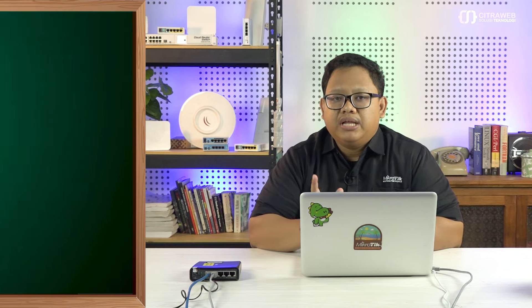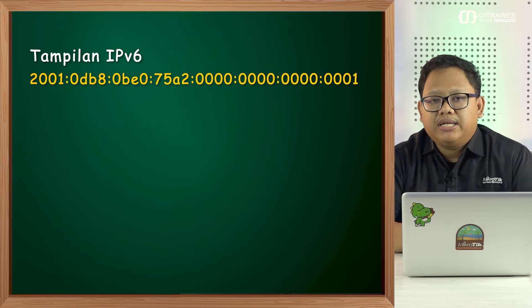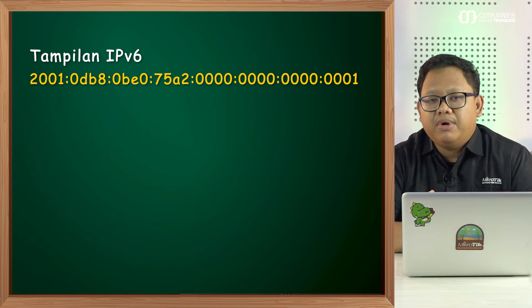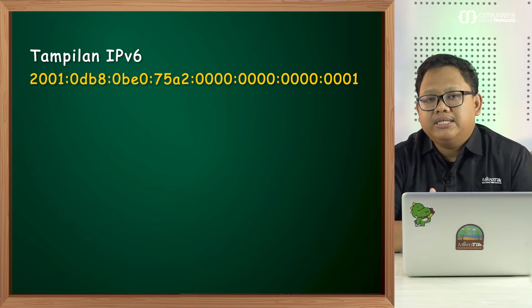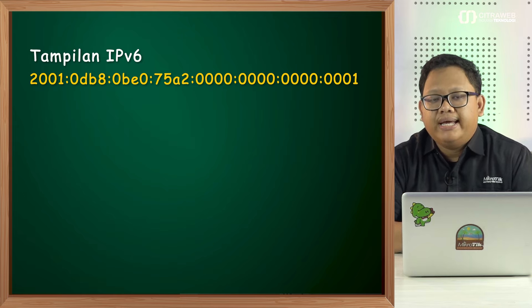Salah satu alasannya mungkin karena IP versi 6 ini memiliki panjang yang berbeda dengan IP versi 4. Di IP versi 6 panjangnya adalah 128 bit dan ditulis dalam hexadesimal. Ingat ya teman-teman, ini bukan hanya desimal saja, tetapi adalah hexadesimal.